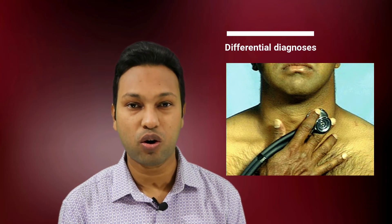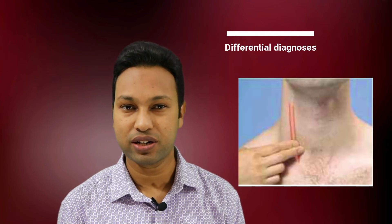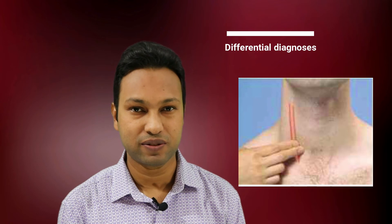This is called an audible bruit. In the case of carotid body tumor, this audible bruit will decrease if the distal part of the carotid artery is pressed with a finger. In the case of glomus jugulare, the patient will experience pulsatile tinnitus.